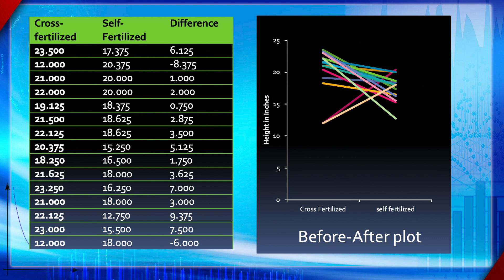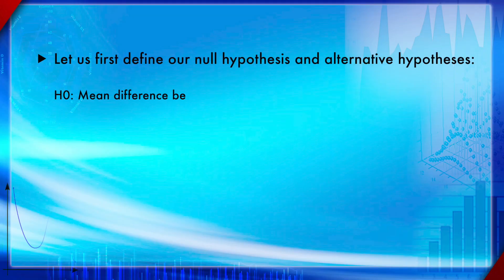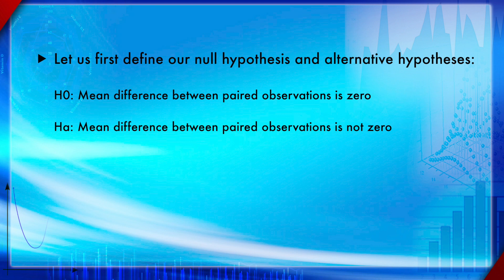The results of the study show that in most cases the weight is reduced for self-fertilized plants, while cross-fertilized plants are taller. However, in certain cases the difference is negative. A convenient way to summarize this data is with a before-after plot, which can easily be done in Microsoft Excel. Before doing the paired t-test, we define the null hypothesis as the mean difference between paired observations equals zero, and the alternative hypothesis as the mean difference is not zero.